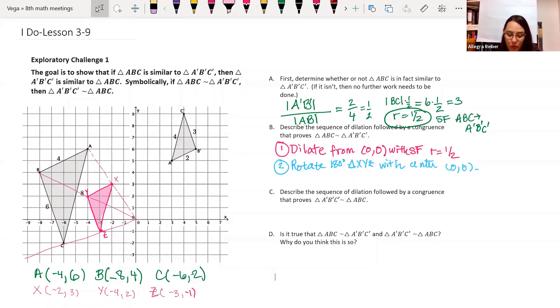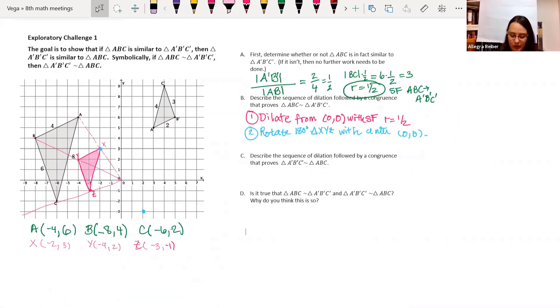Remember, we learned that when we rotate something with respect to the origin, all we need to do is change the signs of X and Y. So I'm going to rotate triangle XYZ with center zero, zero. That's going to change the point X from having coordinates negative two, three to having coordinates two, negative three. X prime will be two, negative three, Y prime will be four, negative two, and Z prime will be three, one.